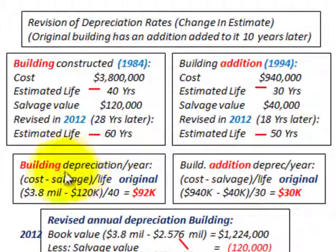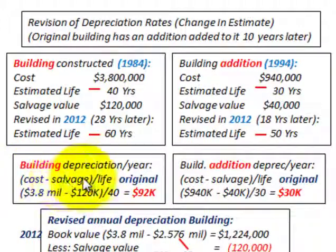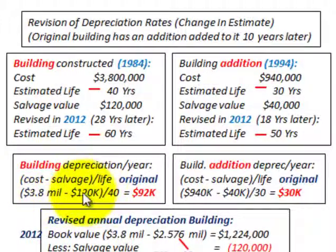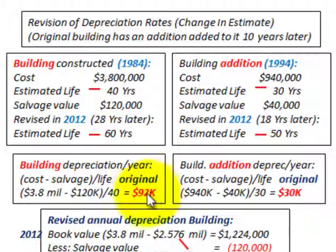For the building, using the straight-line depreciation method, we take cost minus salvage divided by life: $3,800,000 less $120,000 divided by the original life of 40 years gives us $92,000 per year in depreciation. That rate applies for the first 28 years, based on the original estimate of 40 years.